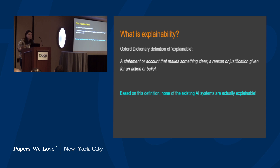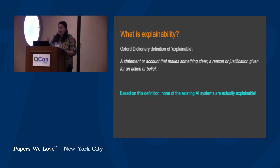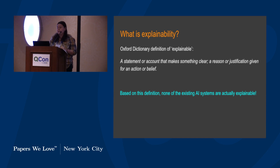Based on that, they start attempting to define explainability. They go to the Oxford Dictionary and search for explainability but don't find anything. They do find the definition for 'explainable,' which is: a statement or account that makes something clear, a reason or justification given for an action or belief. Based on this definition, they believe that none of the current so-called explainable AI systems are actually explainable.